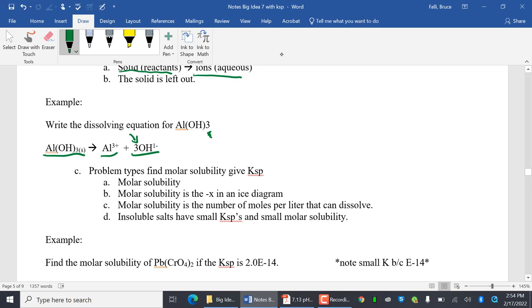Problem types for molar solubility. So we're going to find the molar solubility given KSP. So what you do is you look at your molar solubility, and what molar solubility is, is it's the negative X in an ice diagram, and it's the number of moles per one liter that can dissolve. Insoluble salts have small KSPs and small molar solubility. What does small mean? E to the negative 4 through E to the negative 99.